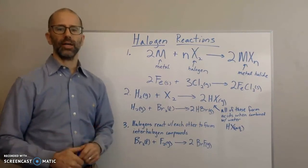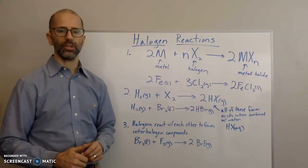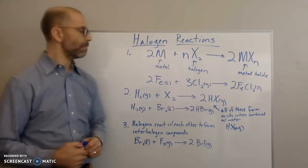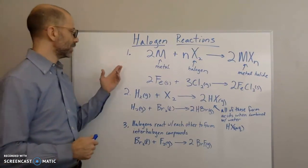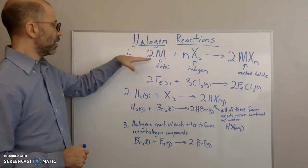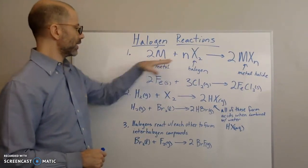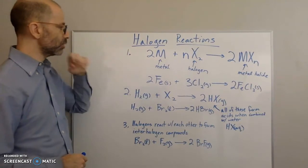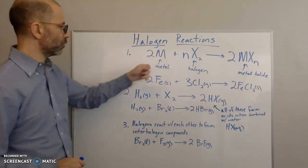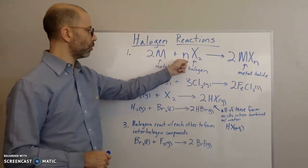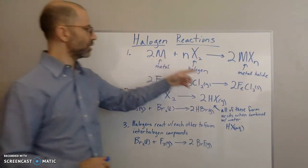There are three main types of reactions that halogens tend to go through. The first one is that they react with metals in a specific way, where the number of moles of halogen ends up being the number of halogen atoms in the metal halide.